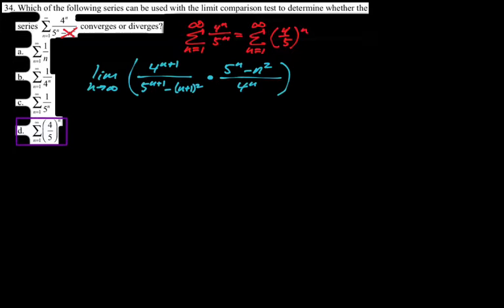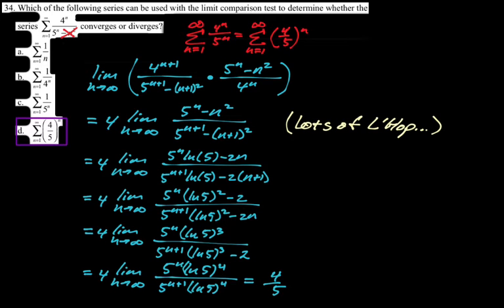If you want to see the work, I decided to do the ratio test on this, which is a lot of work. Interestingly, at the end of the ratio test you just get 4/5 — the ratio of the geometric series you should be limit comparing to. I should have done the limit comparison test to prove it worked, but left to my own devices I will ratio test anything.